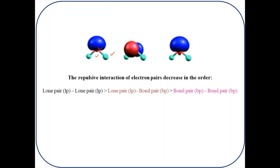The force of repulsion affects the geometry of the molecule. The decreasing order of this repulsive force is: lone pair–lone pair repulsion is maximum, followed by lone pair–bonded pair repulsion, and bonded pair–bonded pair repulsion is minimum. So two lone pairs around a central atom show maximum repulsive force, while two bonded pairs show minimum repulsive forces.